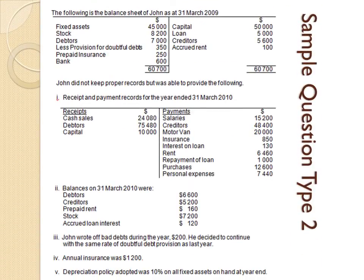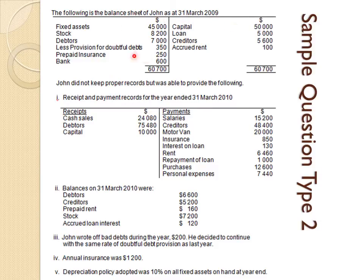Now we look at a more complete question — Type 2. The following is the balance sheet of John as at 31st March 2009, which represents starting assets and liabilities. John did not keep proper records but provided receipts and payments — reminding us this is the bank account — plus balances on 31st March 2010 as part of the ending balance sheet.